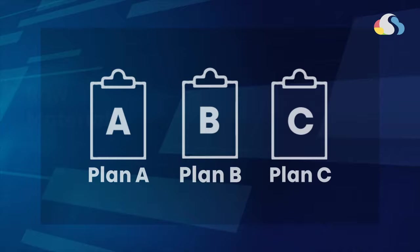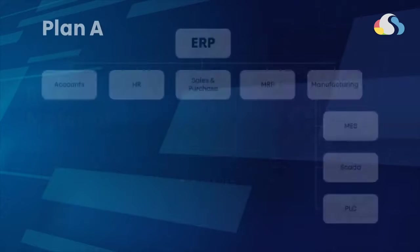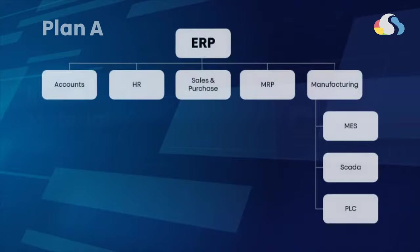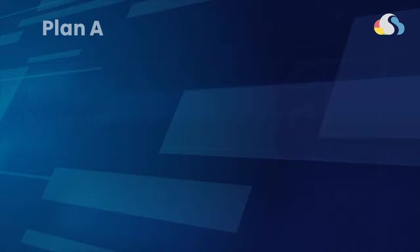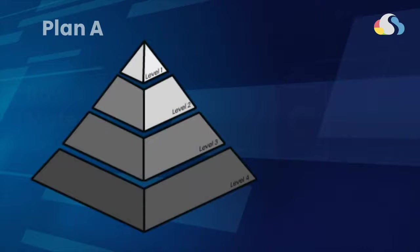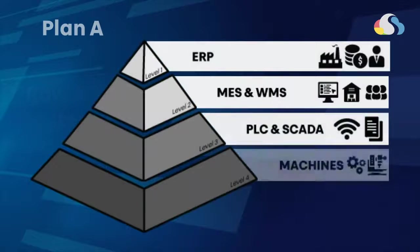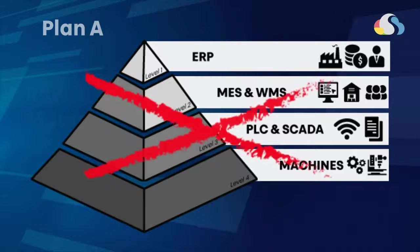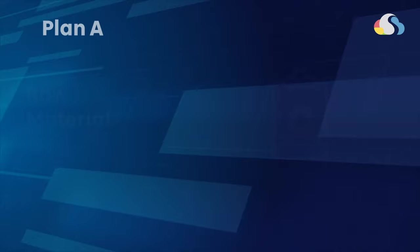Option A is to propose that PanRite implement an end-to-end ERP solution, which is their existing plan, but it's also the one causing a lot of objections and obstacles. A full-scale ERP would include ERP, MES, WMS, PLCs, and machine integration — a full-scale thing that will definitely do everything they want. However, this is not something I would recommend that they do.